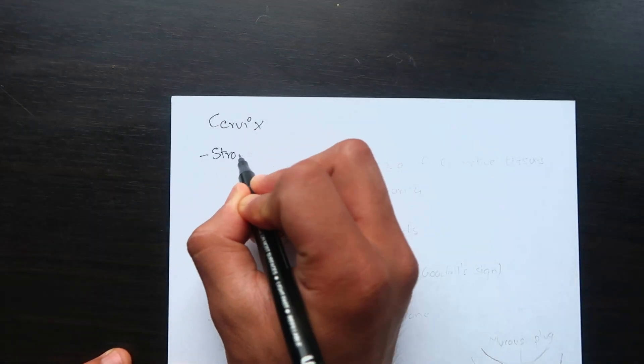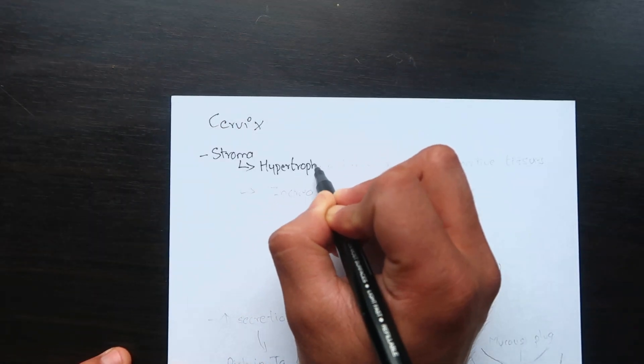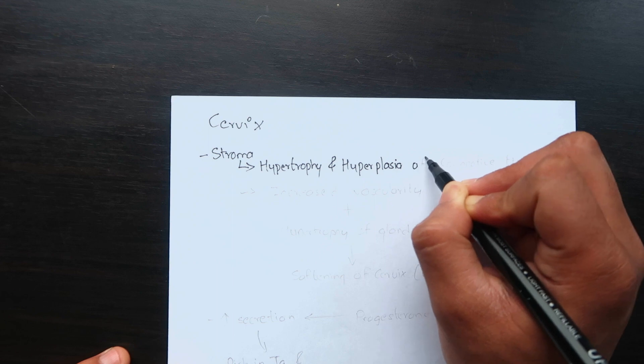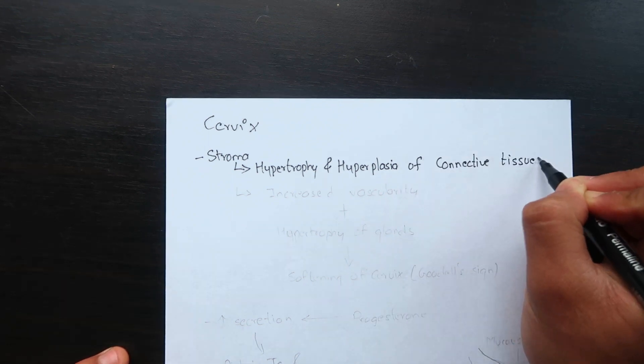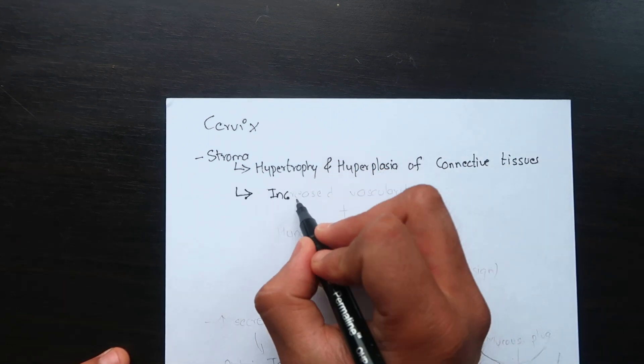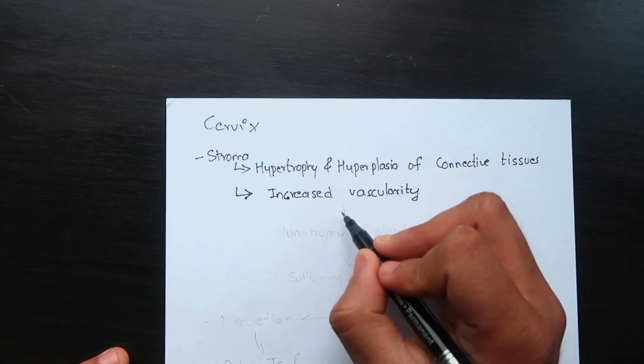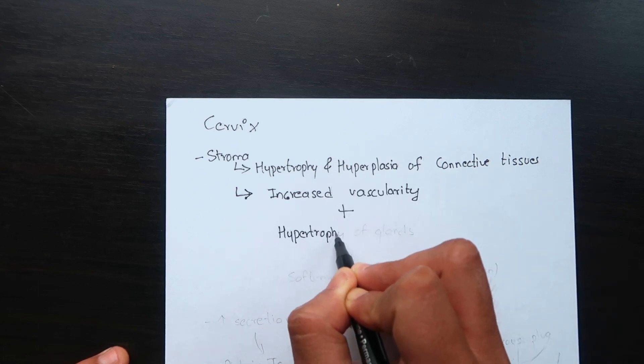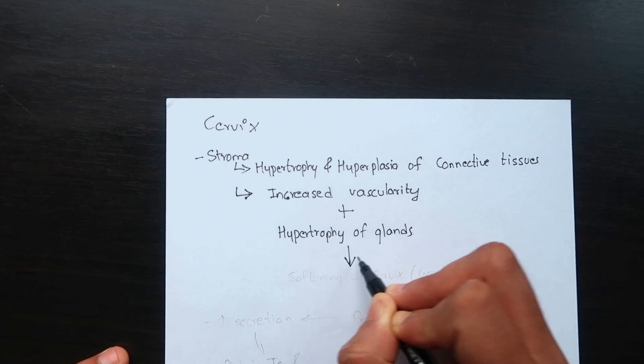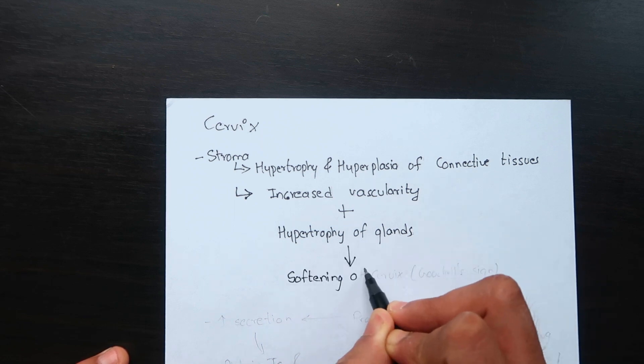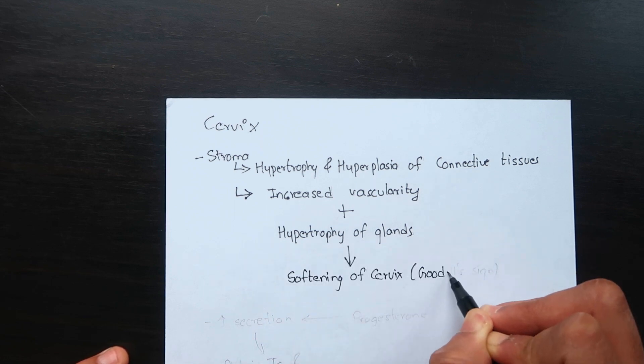In the cervical stroma, there are hypertrophy and hyperplasia of the elastic and connective tissues. Vascularity is increased and marked hypertrophy and hyperplasia of the glands. All these lead to marked softening of the cervix or Goodell's sign, which is evident as early as 6 weeks.